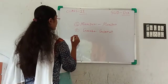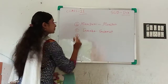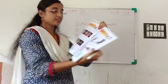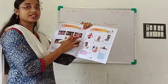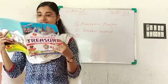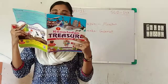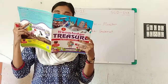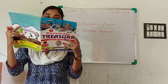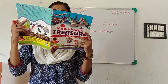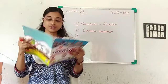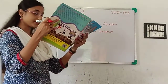Next, number 3. Odissi — O-R-I-S-I. Odissi is a dance form from the state of Odisha. It is recognized as one of the 8 classical dance forms of India. So Odissi, Odisha.